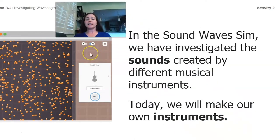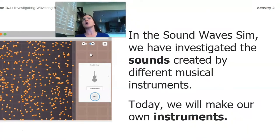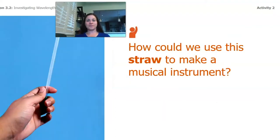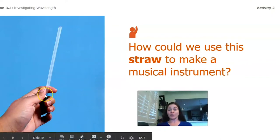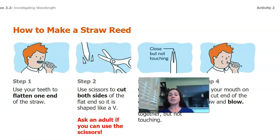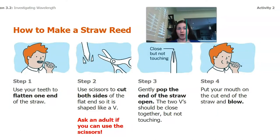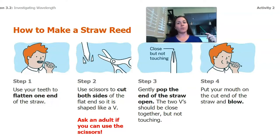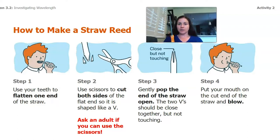In the Soundwave Sim, we've investigated sounds created by different musical instruments — a piano, a viola, a cello. Today we're actually going to make our own instruments using a straw. We're going to use our teeth to flatten one end of the straw. Make sure you wash your hands first because we need to be careful about germs, bacteria, and viruses. Then you're going to flatten one end of the straw and, once you have an adult's permission, take your scissors and cut the ends to make a V shape.